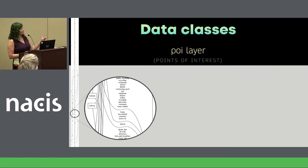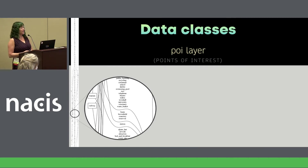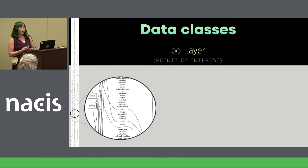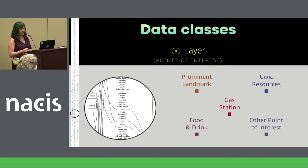This diagram is from OpenMapTiles and shows the possible values for classes and subclasses of points of interest in OSM-based tile data. After deciding which points of interest were relevant for a certain use case, I included those and categorized them into a few categories, so there's a layer for each of those.